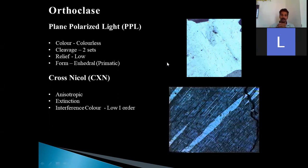Cleavages of two sets are visible. As we have discussed, orthoclase has perfect cleavages. Two sets of cleavages are commonly visible. Relief is low and form is euhedral. And mostly they are in prismatic shapes. Prismatic means elongated shapes. They have prism-like laths, so they are much common in thin section.